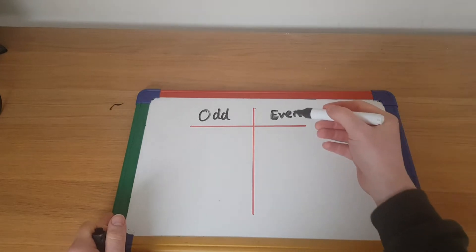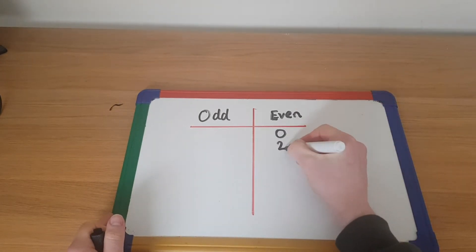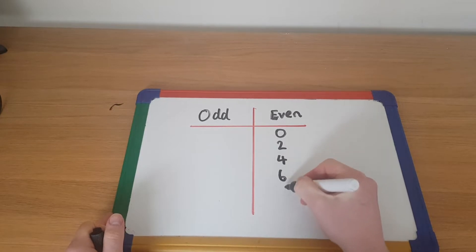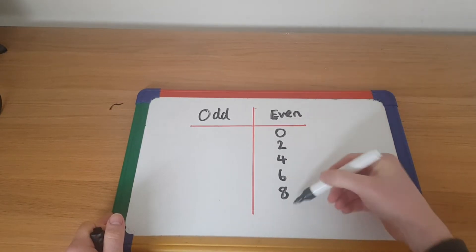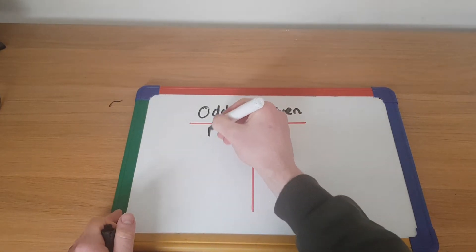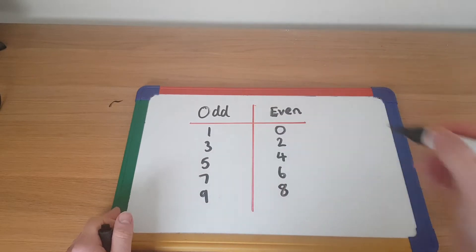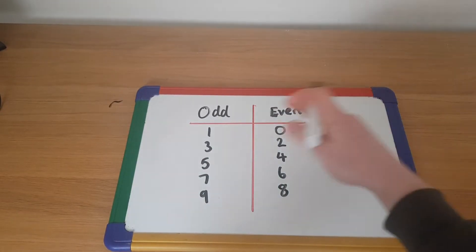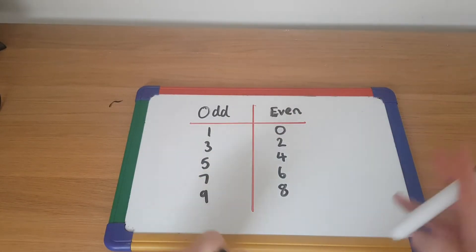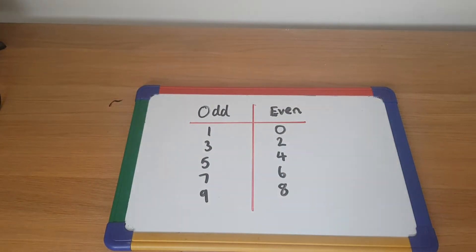So even numbers then, starting with zero, zero is the number, you've got to remember that one, two, four, six and eight. And as you can see, they're all in the two times table. And then your odd numbers then are every other number, one, three, five, seven, and nine. So with all these numbers, we can put them together in order and create, sorry, all these digits, I should say, and create a bigger number.